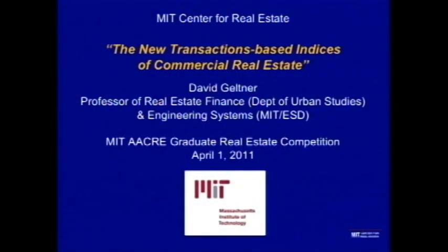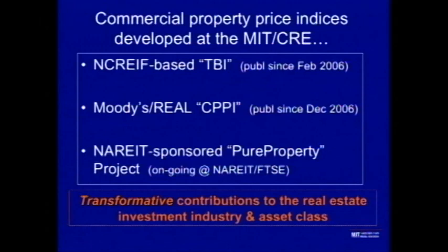Rather than appraised values or self-reported values of a particular niche or population of properties, this would be a much broader population of properties, based on solid actual cash changing hands. So that was our idea, and we've been involved in the development of three indexes. The first one is based on the NACREF database. It's known affectionately as the TBI — Transaction-Based Index — because it covers the same population of properties tracked by the NACREF index, but based on the properties that sell from that index and the actual transaction prices of those sales. We launched that index with the cooperation of NACREF in February of 2006 with fourth quarter 2005 data, and we've been publishing it every quarter since then at the center.